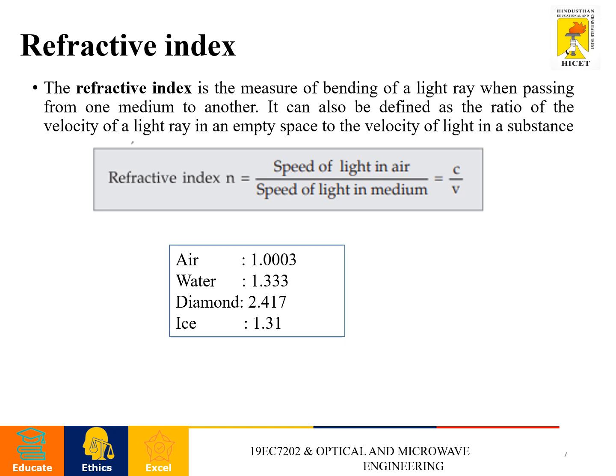For example, in case of air medium, the refractive index value is 1.003. In case of water medium, the refractive index is 1.333. For diamond, the refractive index value is 2.417. In ice, the refractive index value is 1.31.